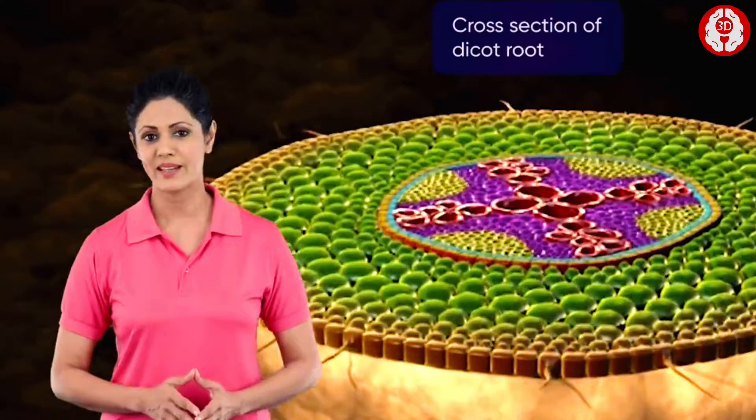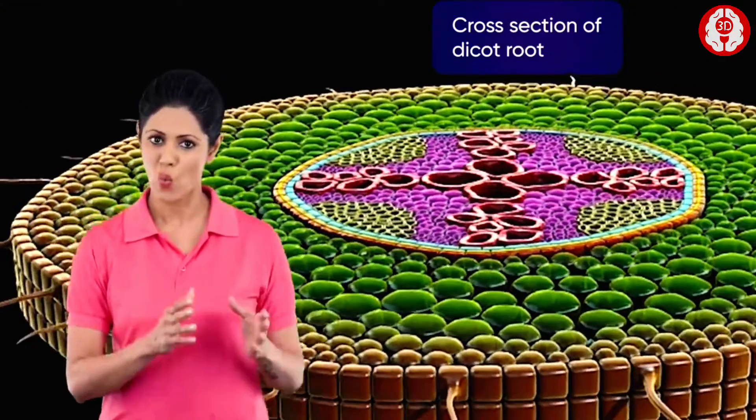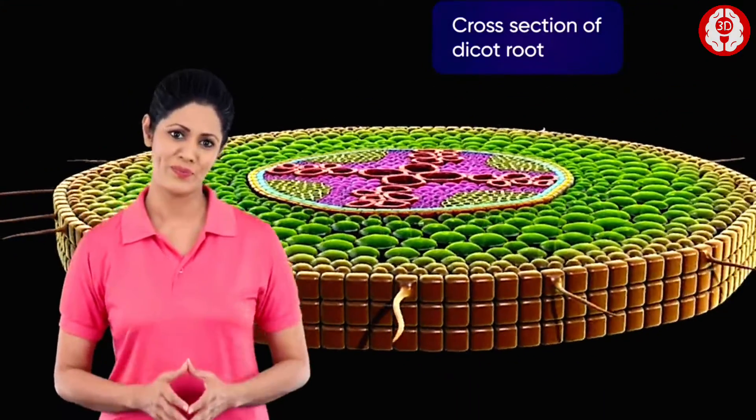On taking the transverse section of the root, several tissues can be seen. Let us study each tissue one by one.